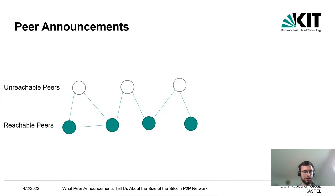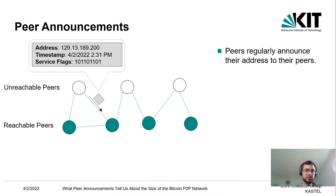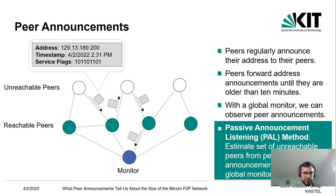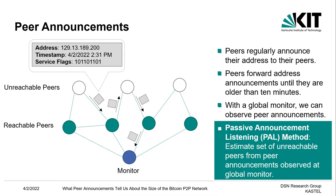In a peer-to-peer network, unreachable peers connect to reachable peers, and each peer regularly announces its address to its peers. Such an address announcement contains an address, a timestamp, and service flags of the peer. Peers forward these address announcements until the announcement is older than 10 minutes. With a global monitor that connects to all reachable peers, we can observe these peer announcements, and we propose the passive announcement listening method that estimates the set of unreachable peers from them.